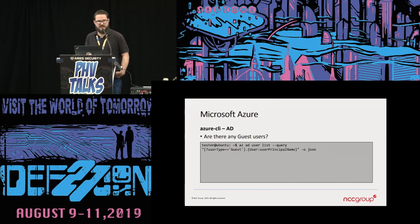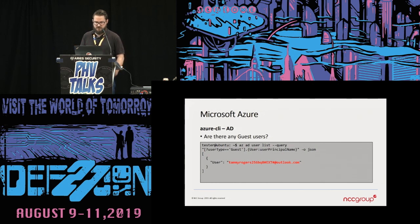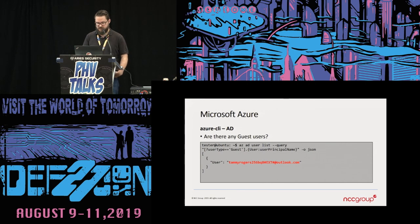Next we check what groups this user is associated with by specifying the user ID. We see that Arthur is part of Infotech and sysadmins — not surprising for a technology worker — along with the object IDs for those groups. We also look for guest users in the account. These are not managed by your organization but have been added with permissions. We run this command and see Tammy Rogers with an 'ext' tag, indicating an external user. Since you don't manage their account, if they have a weak password it's much harder to ensure their security.